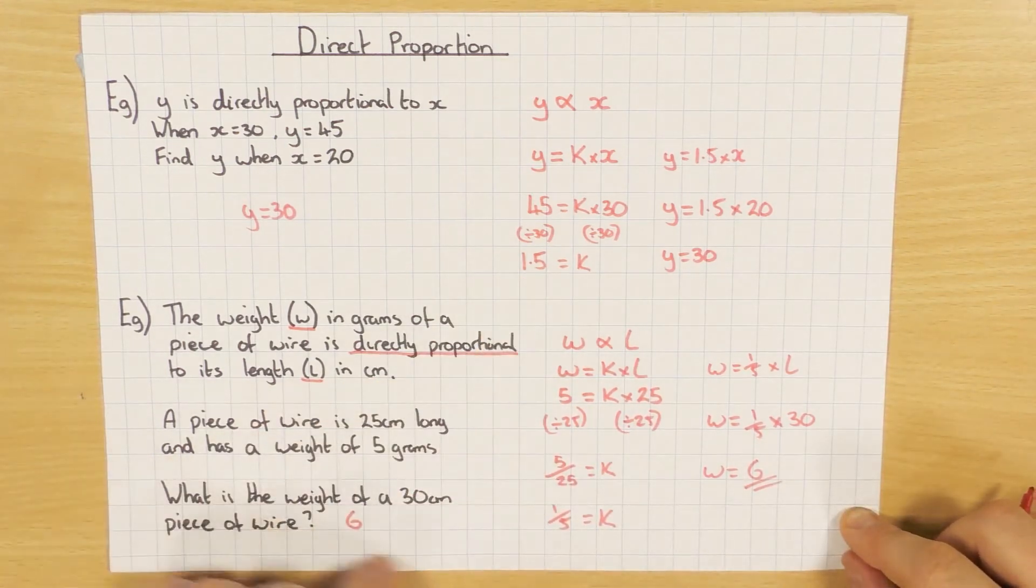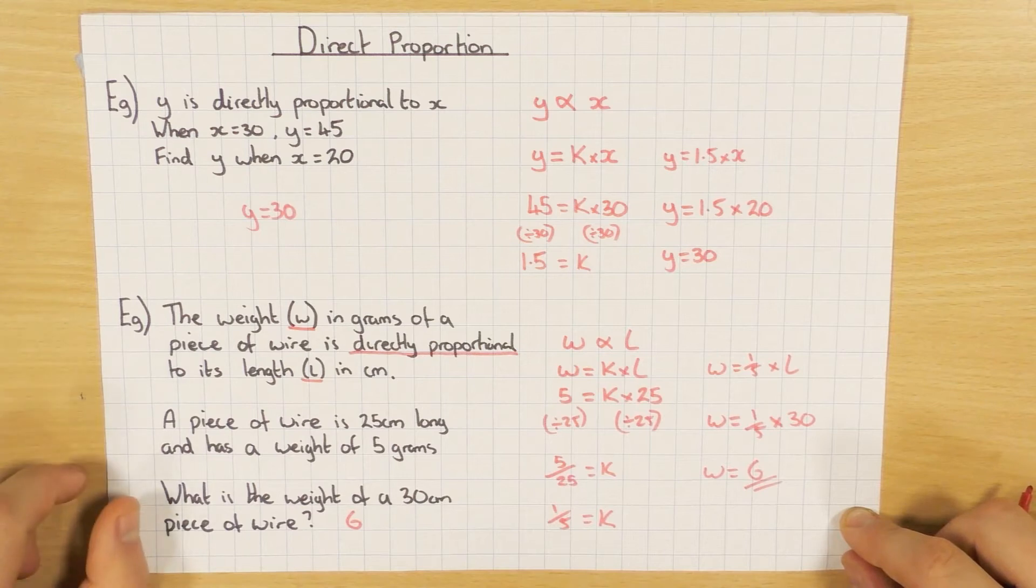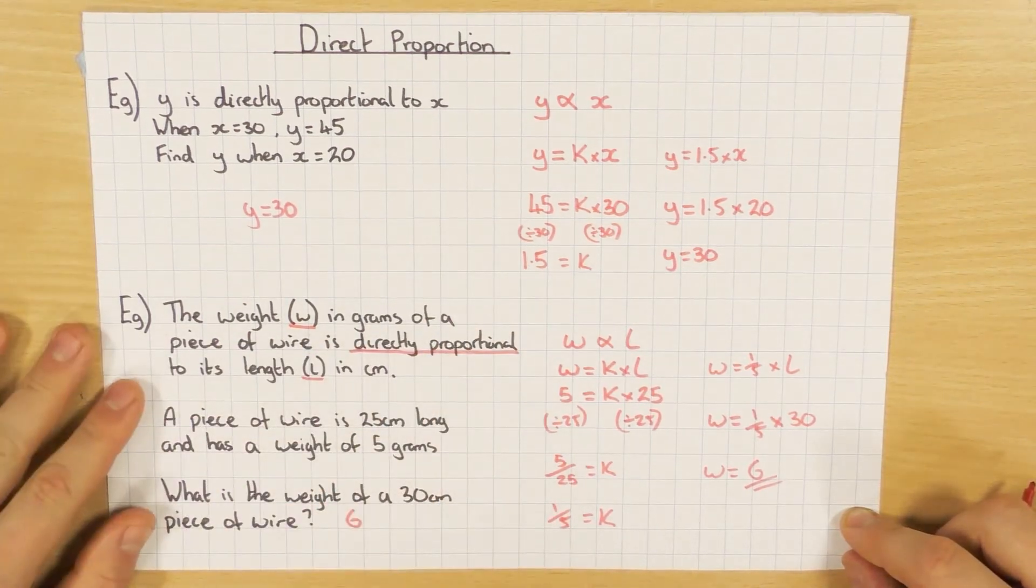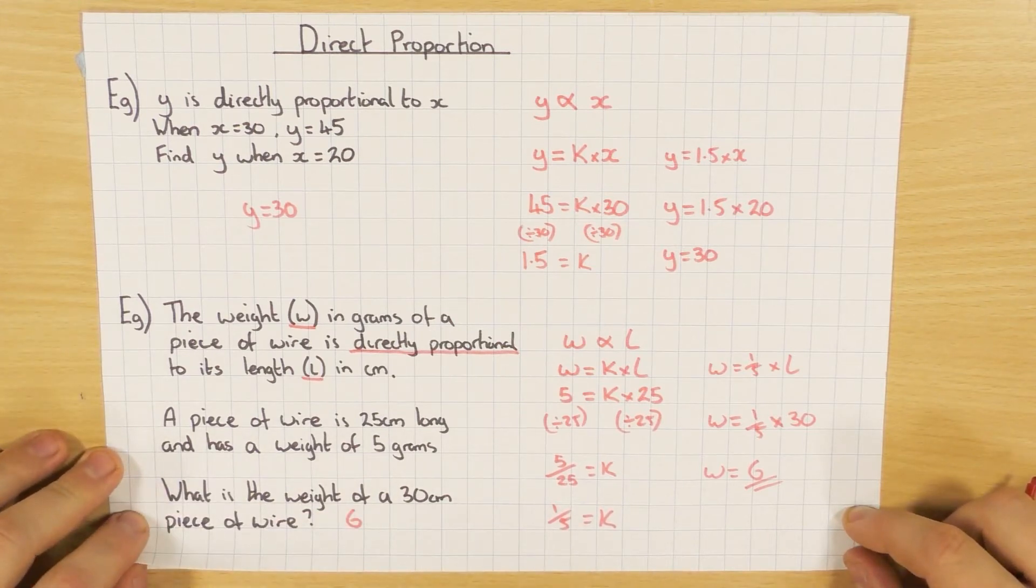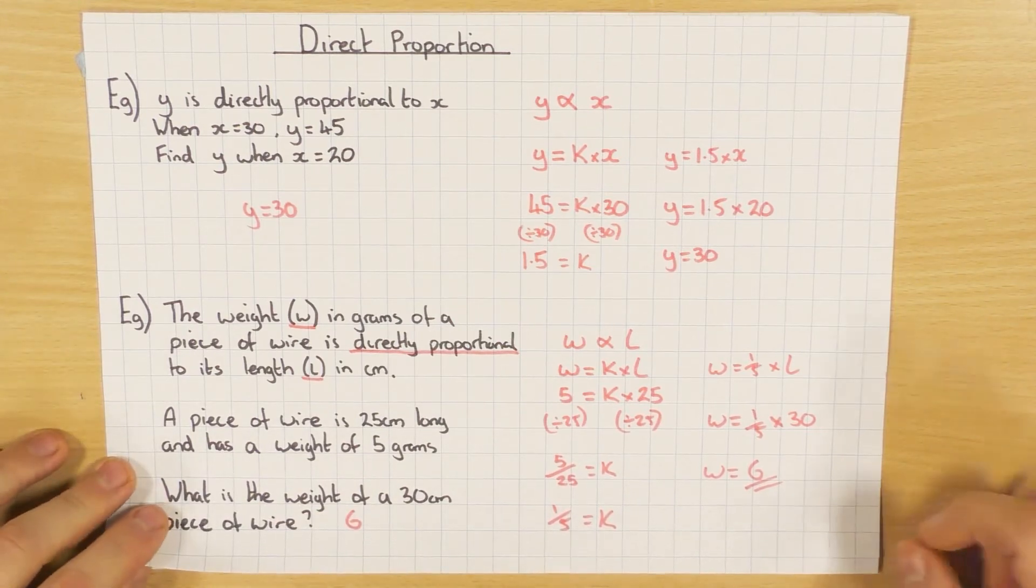So one there with a decimal, one there with a fraction. It doesn't matter which way around you do it. Sometimes it's easier to have a decimal. Sometimes if it's a recurring decimal, it's easier to keep it as a fraction. So there's two examples. Let's have a look at some more.